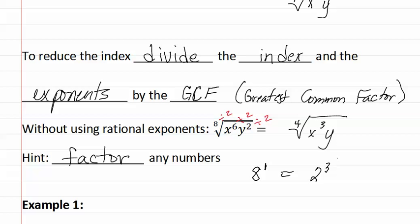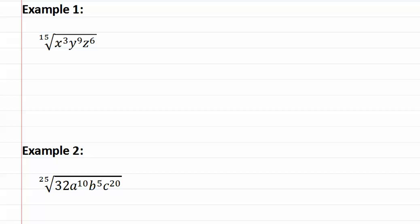Let's look at example one. Here is example one. Let's start by looking at what number can go into each of these numbers. We have fifteen, three, nine and six. We know that they all have three in common, so we divide all of them by a three.